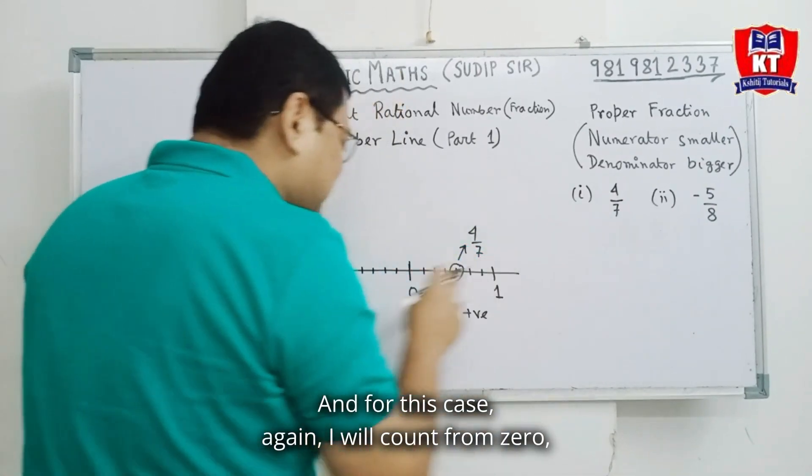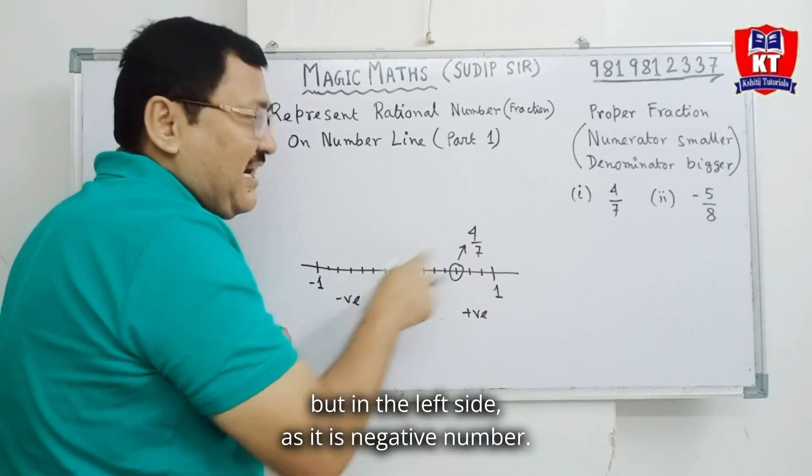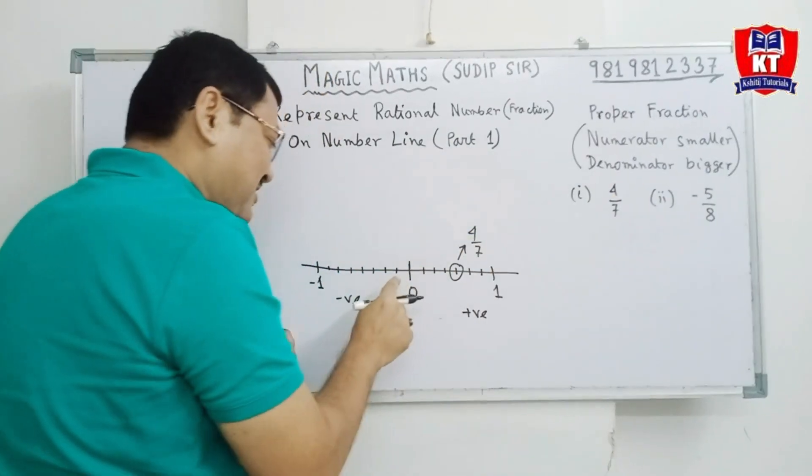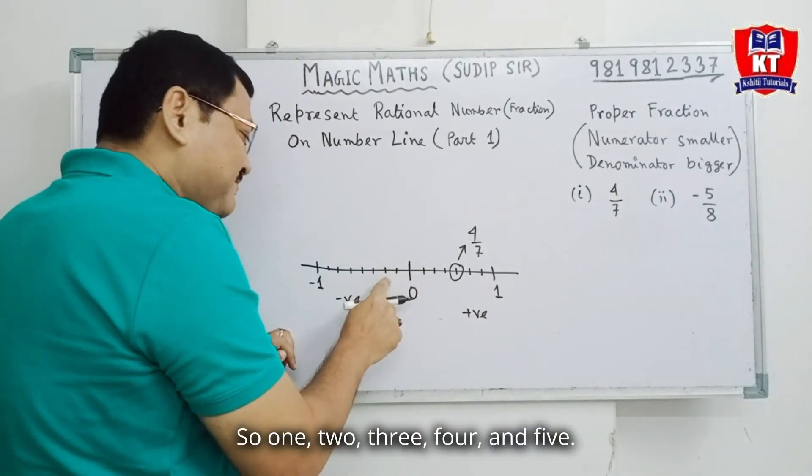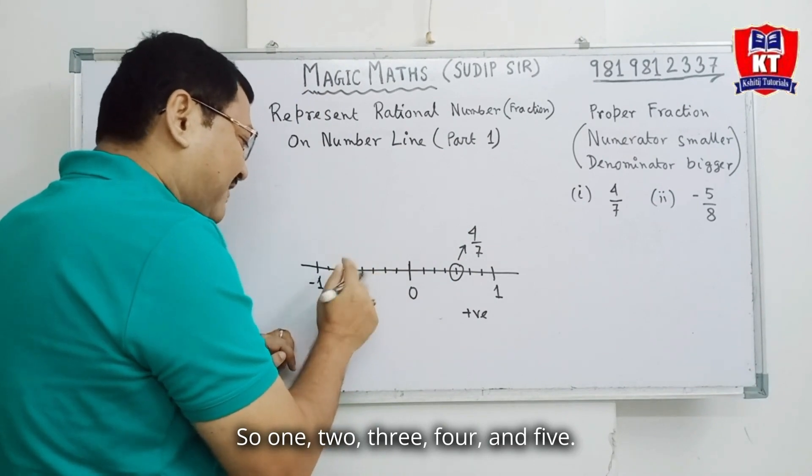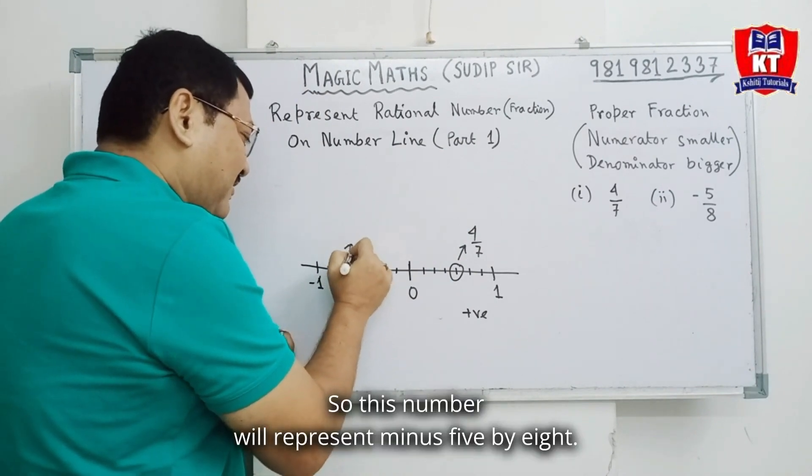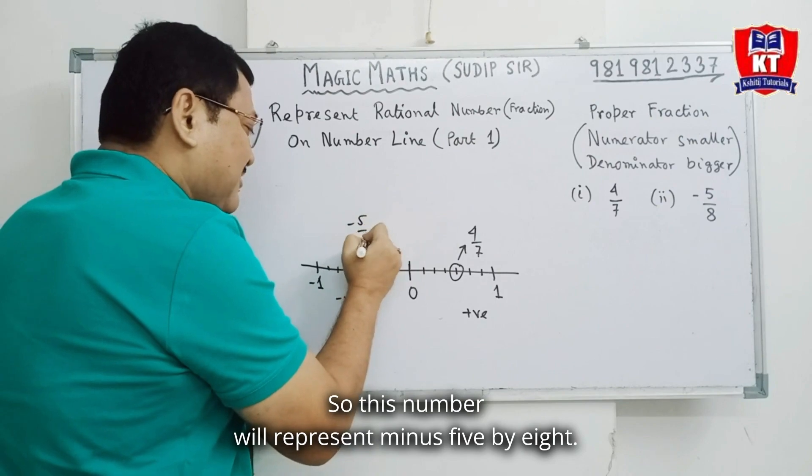And for this case, again, I will count from 0, but in the left side, as it is negative number. So, 1, 2, 3, 4, and 5. This. So, this number will represent minus 5 by 8.